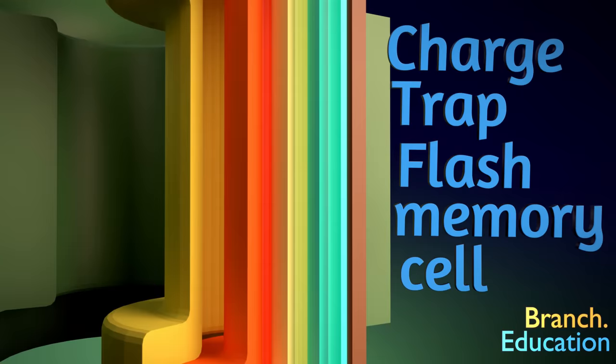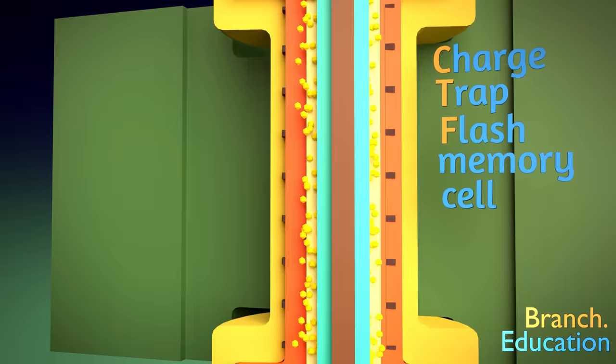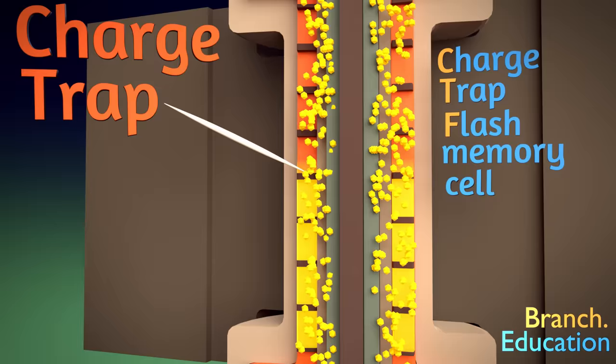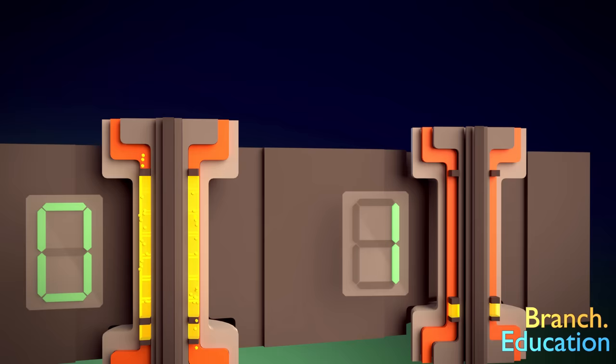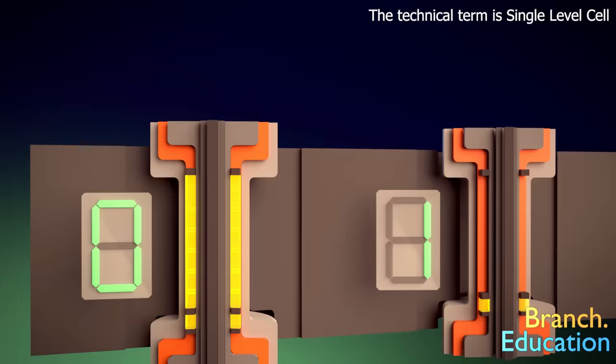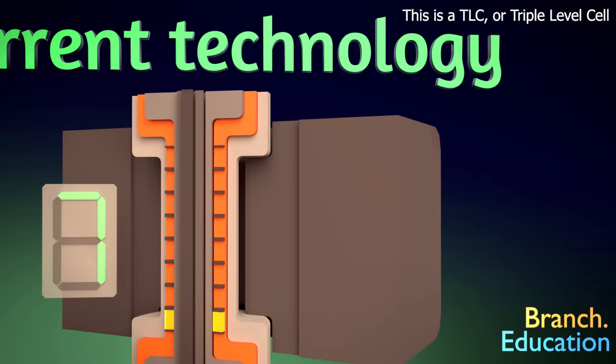This is the basic unit of a computer's long-term memory storage, and it's called charge-trap flash memory. So, how does it work? Well, in each cell, we can store information by placing different levels of electrons onto a charge-trap, which is the key component inside the memory cell. Older technology could only store two different levels of electrons, a lot of electrons or very few electrons, which were used to store a single bit as a one or zero.